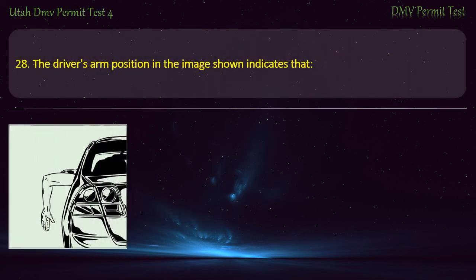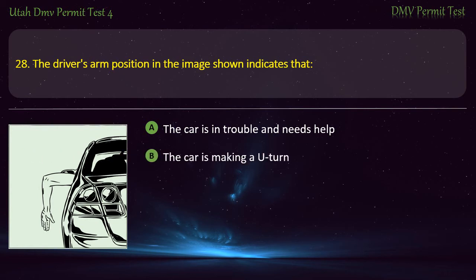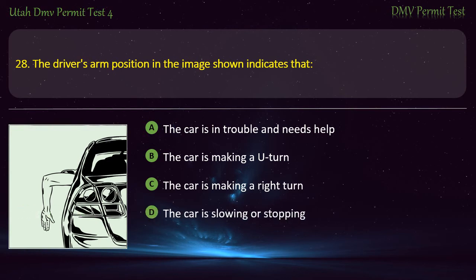Question 28. The driver's arm position in the image shown indicates that: The car is in trouble and needs help; The car is making a U-turn; The car is making a right turn; or The car is slowing or stopping? Answer: The car is slowing or stopping.